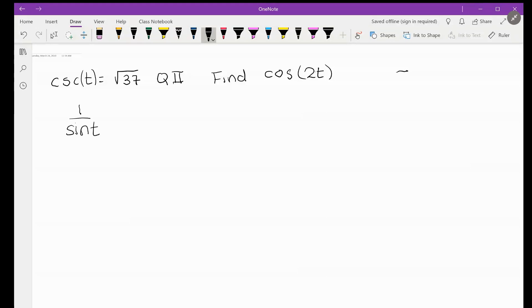Remember that sine in SOHCAHTOA, we can think of sine as opposite over hypotenuse. So cosecant is just thinking of it as hypotenuse, because it's the reciprocal, over the opposite. We can think of that as cosecant of the angle. So let's start with that.